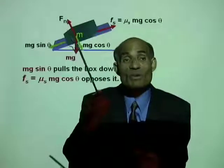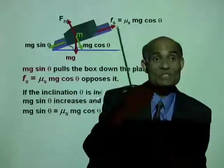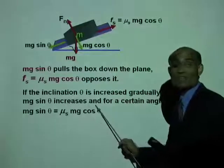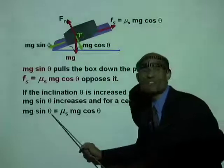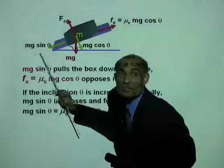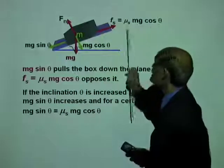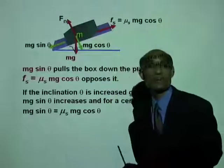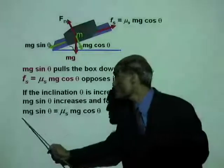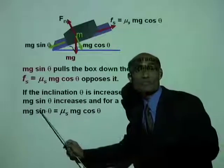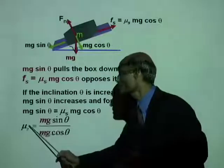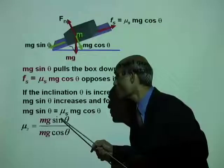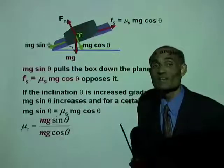That means the box can now move without acceleration. If the inclination theta is increased gradually, mg sin theta increases, and for a certain angle, the force acting down the plane will be exactly equal to mu S mg cos theta. You can use these equations to obtain an expression for mu S: mg and mg cancel from either side, and dividing both sides by cos theta gives mu S equal to mg sin theta divided by mg cos theta.